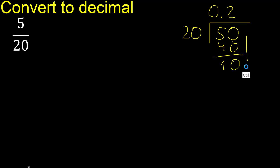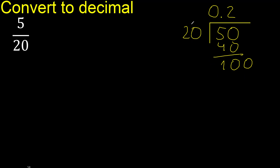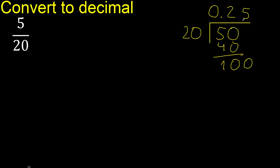There is no number that goes down, so complete with 0 — point is here. With 100: 20 multiplied by what number? 20 multiplied by 6 is 120 — excessive. 20 multiplied by 5 is 100. Subtract: 0.